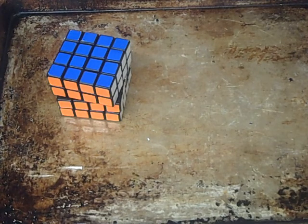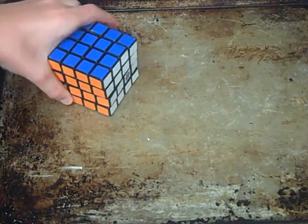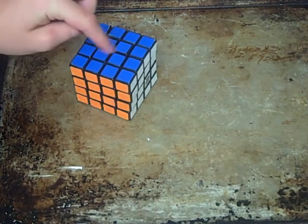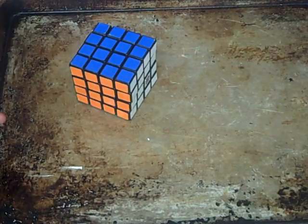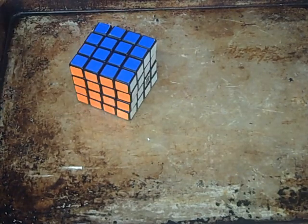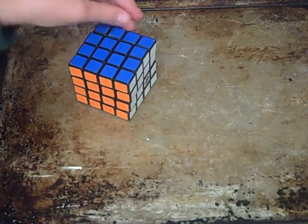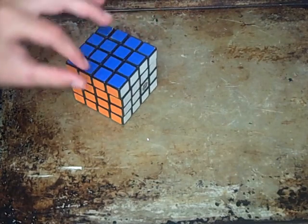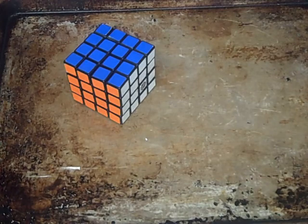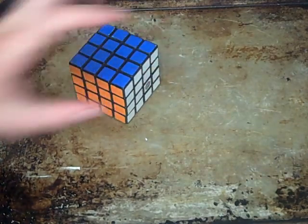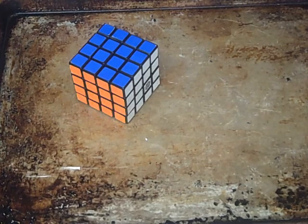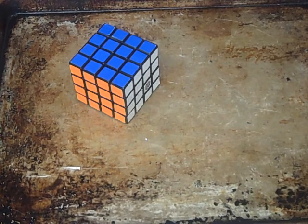And, so, here is the basic mentality to solving a cube larger than a 3 by 3. First, solve the center. First, solve all the centers, and make sure that they're in the right spot. Then, pair up the edges. You'll see what I mean by that. Then, solve the cube as much as you can, like a 3 by 3. If it's an odd numbered cube, you can solve it completely like a 3 by 3.